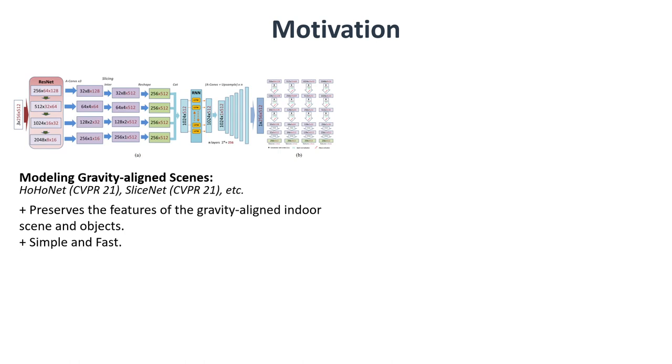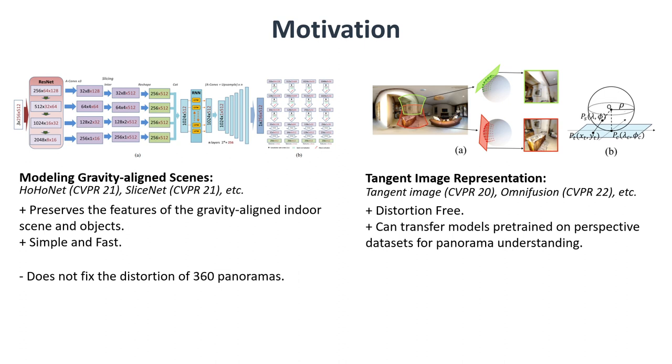Based on the properties of panoramas, there are two mainstream approaches for indoor panorama understanding. One directly works on panoramas by modeling the gravity-aligned scenes and objects. By capturing and preserving the features of the gravity-aligned scenes and objects, this approach achieves competitive results on indoor understanding tasks with a fast inference speed. However, this approach does not consider the distortion, which leads to suboptimal results.